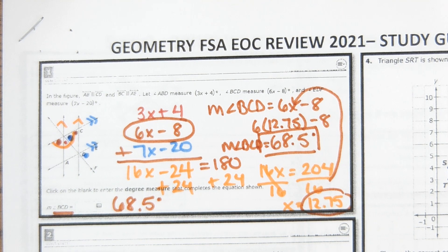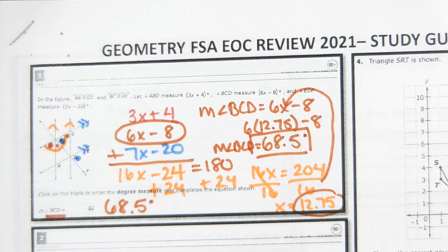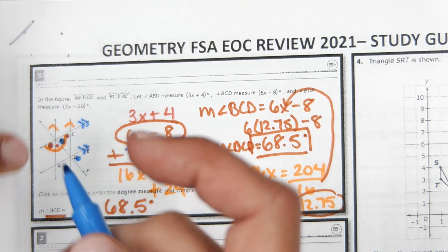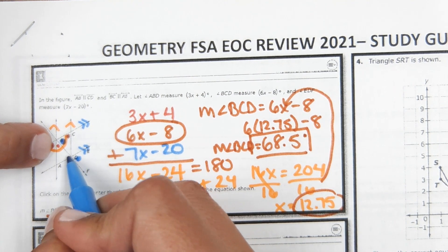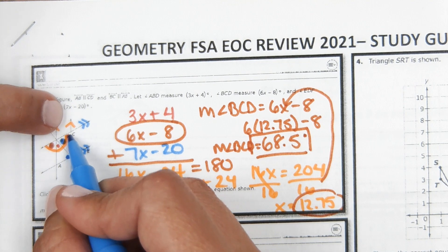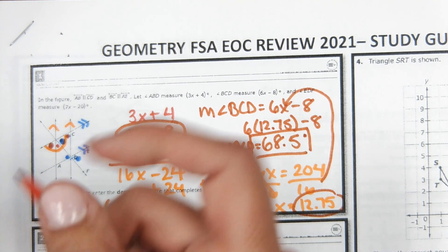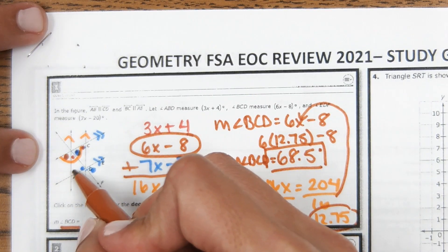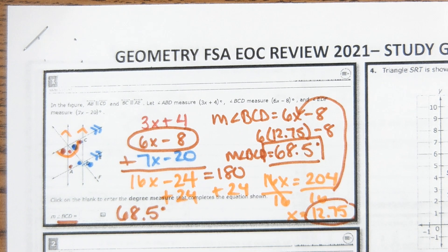Another way to look at it: the three angles make a straight line. You could also recognize there's a triangle here — vertical angles are equal, and in a parallelogram opposite angles are equal. Also, three angles of a triangle equal 180, so you could approach it that way too.